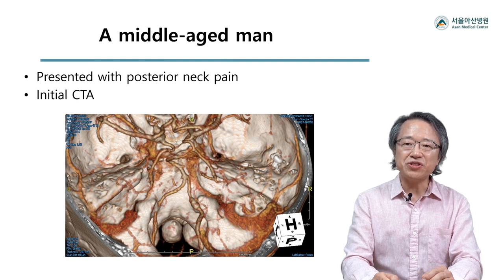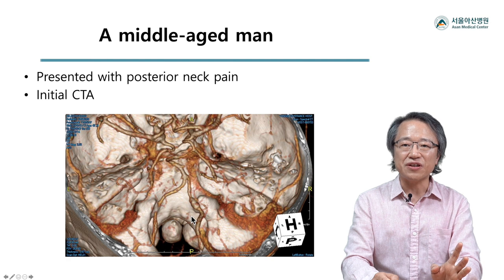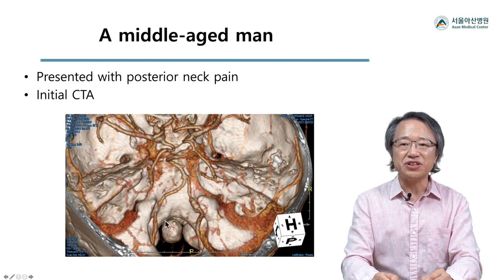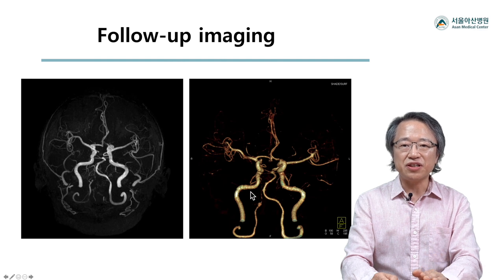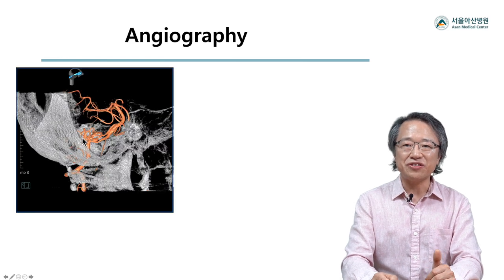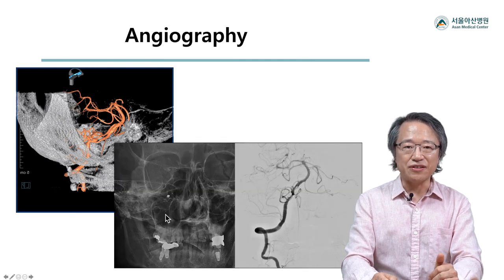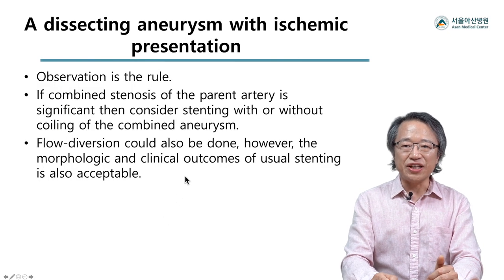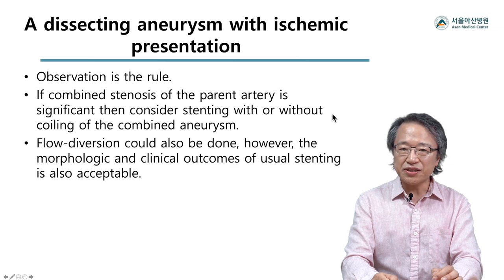For example, a patient presenting with posterior neck pain showed segmental distension of the right distal vertebral artery and focal stenosis in the opposite segment. One-month follow-up MRA and three-month follow-up CTA showed rapidly changing morphology. Please note focal aneurysm formation at the dissected distal vertebral artery segment on 3D angiography. We underwent stent-assisted coiling. When the dissecting lesion presents with ischemic symptoms, stenting can be done not only for perfusion improvement but also for stabilization of the dissecting lesion.